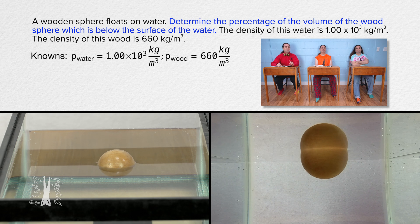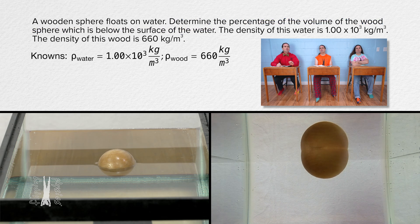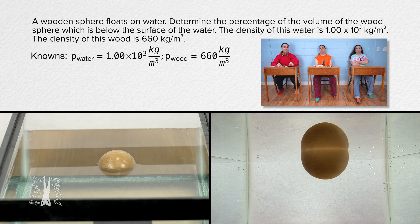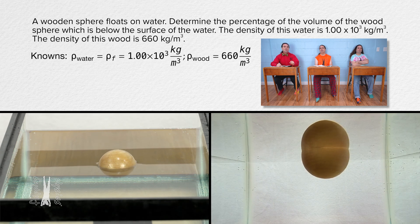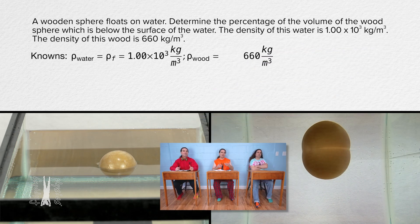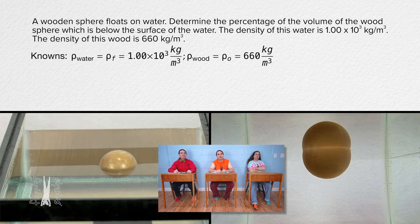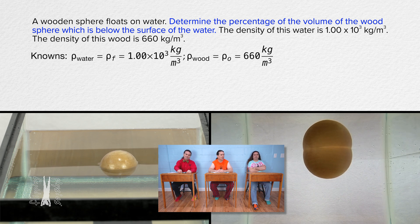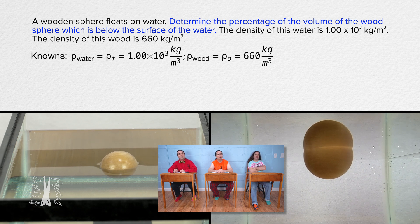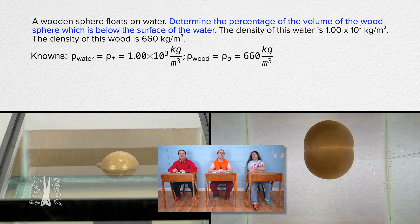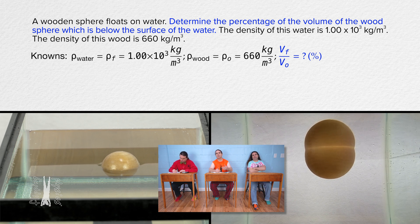How do we find that? Water is the fluid displaced by the object, so the density of water is also the density of the fluid displaced by the object. And wood is what the object is made of, so the density of wood is also the density of the object. The volume percentage of the wood sphere which is below the surface of the water is the ratio of the volume of the fluid displaced by the object to the volume of the object itself, expressed as a percent. So the volume of the fluid displaced by the object divided by the volume of the object equals question mark as a percent.